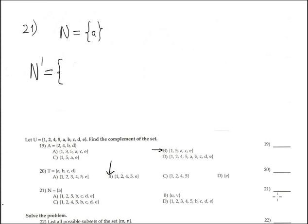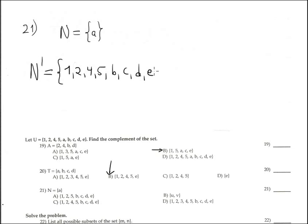For the next complement problem, the complement is formed by only one element. The complement consists of elements inside the universal that are not inside set A. Everything in the set: 1, 2, 4, 5, no A, B, C, D, and E. This corresponds with option C.